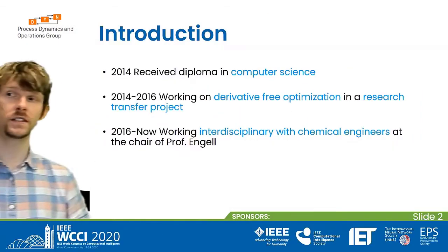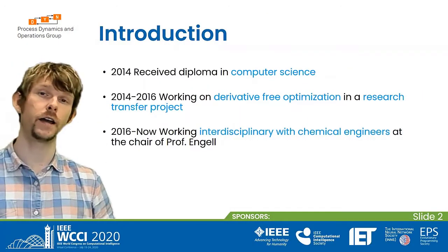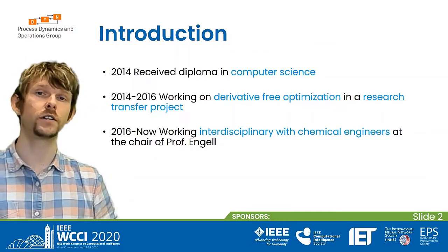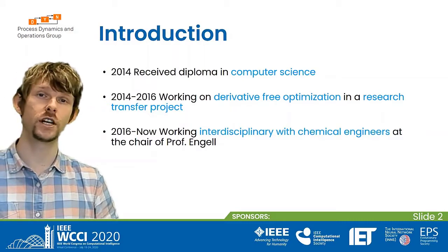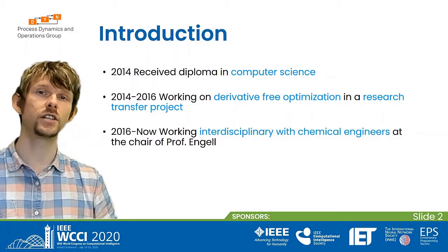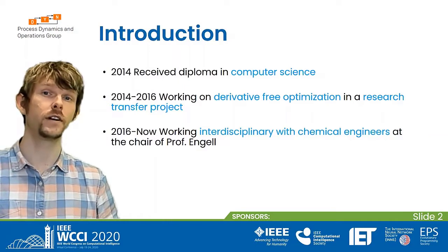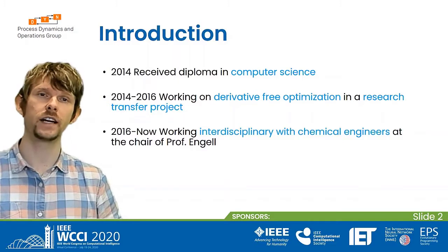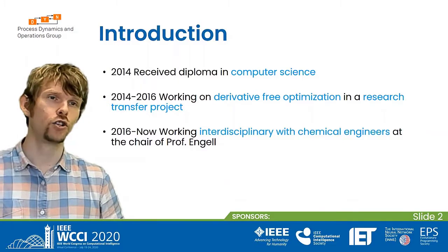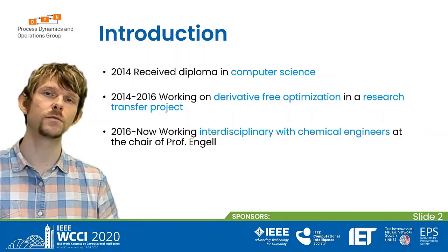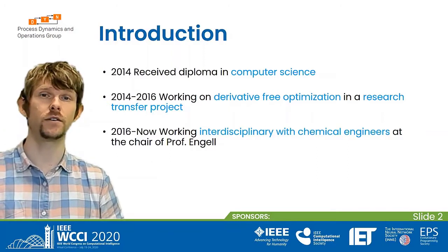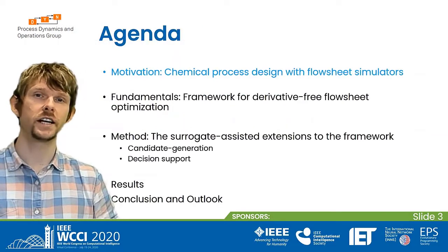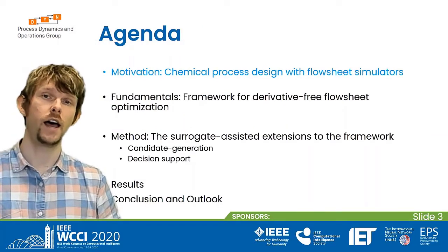Let me shortly introduce myself. I received my diploma in computer science in 2014 and then joined a research transfer project working with derivative-free optimization algorithms and evolutionary algorithms. There I got to know my current boss, Professor Engel, and joined his chair in 2016, where I have the possibility to work interdisciplinary with chemical engineers.